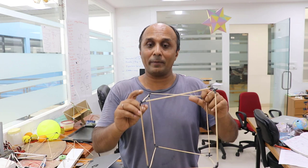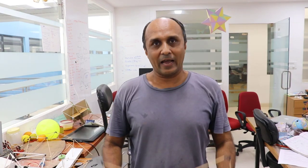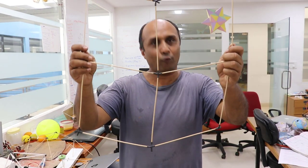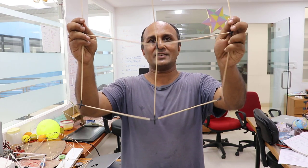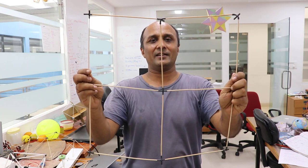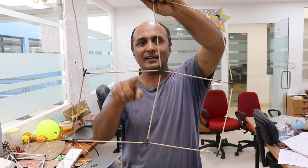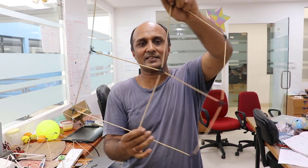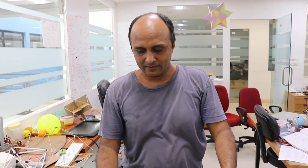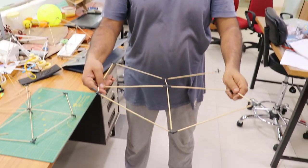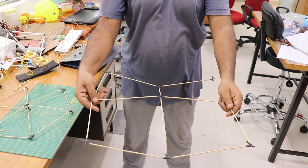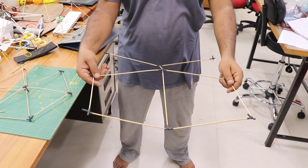Why stop at 3 squares? If we join 4 squares at a point, you can see this becomes a flat plane. Each angle is 90 degrees, and 90 times 4 is 360 degrees, making it flat. So you cannot make any 3D structure with 4 squares meeting at a point. You have to stop at 3 squares, and that gives you the cube.